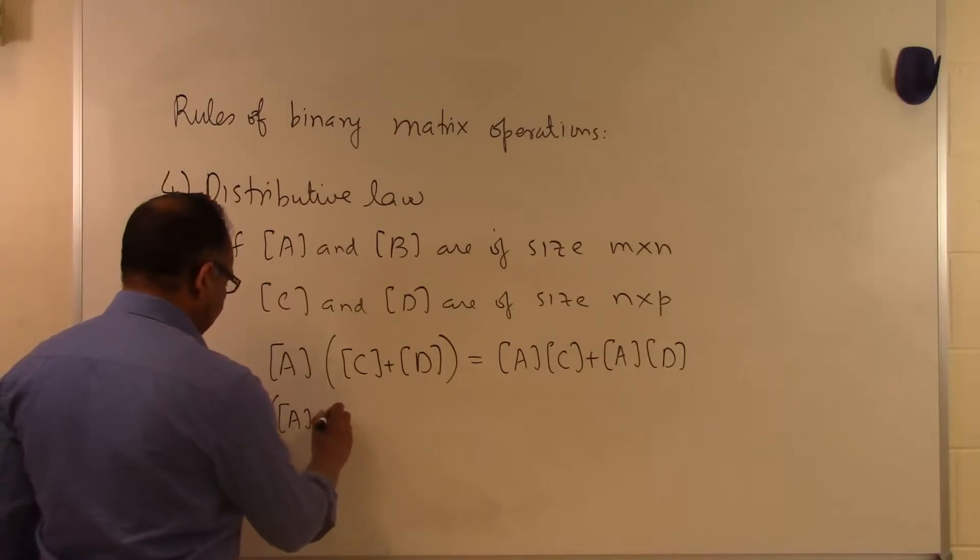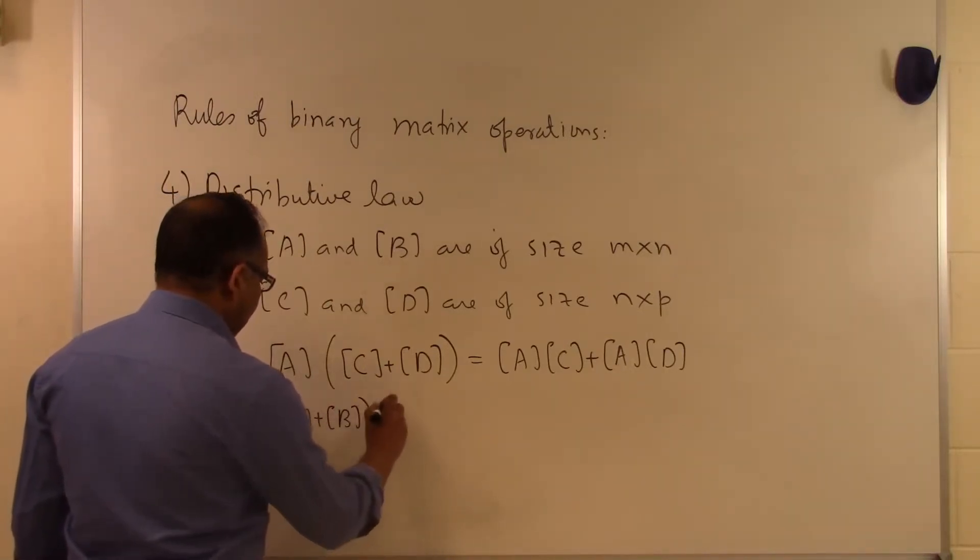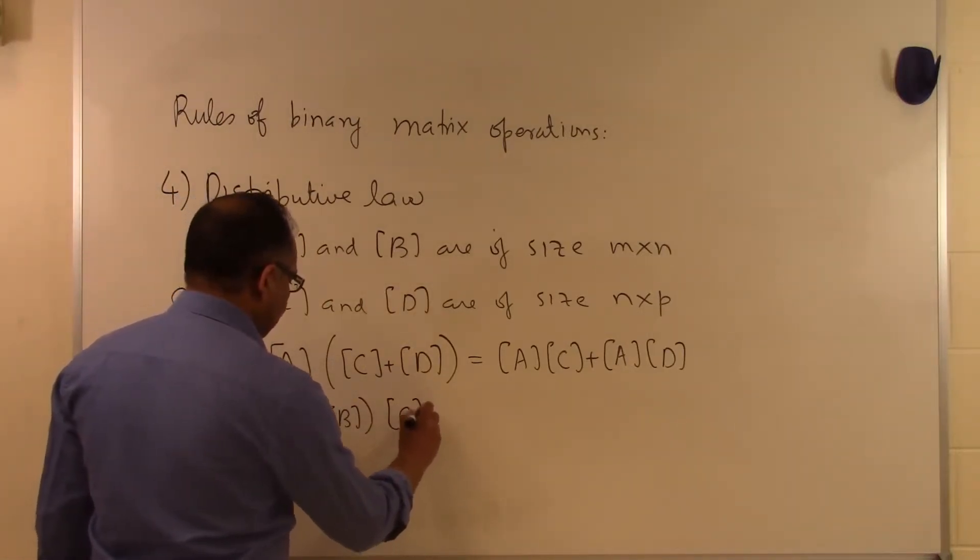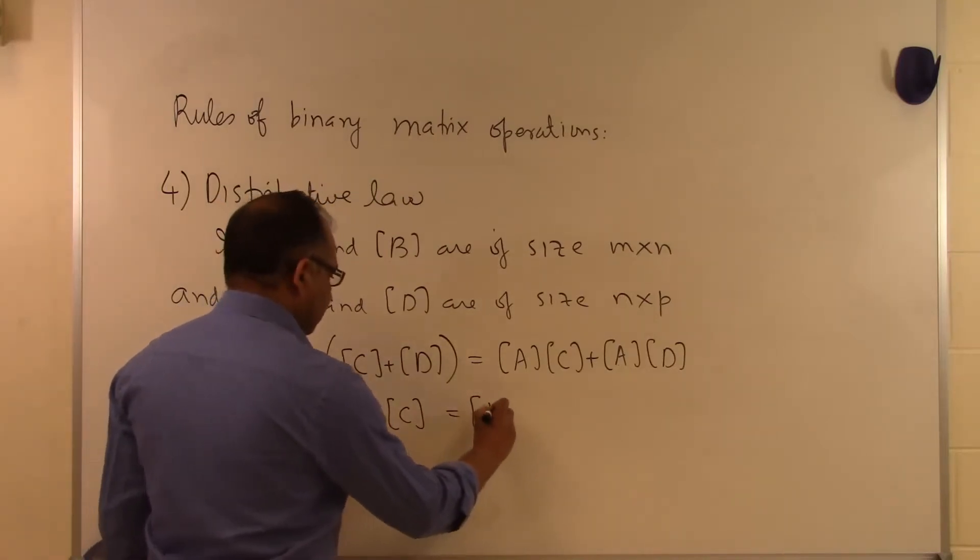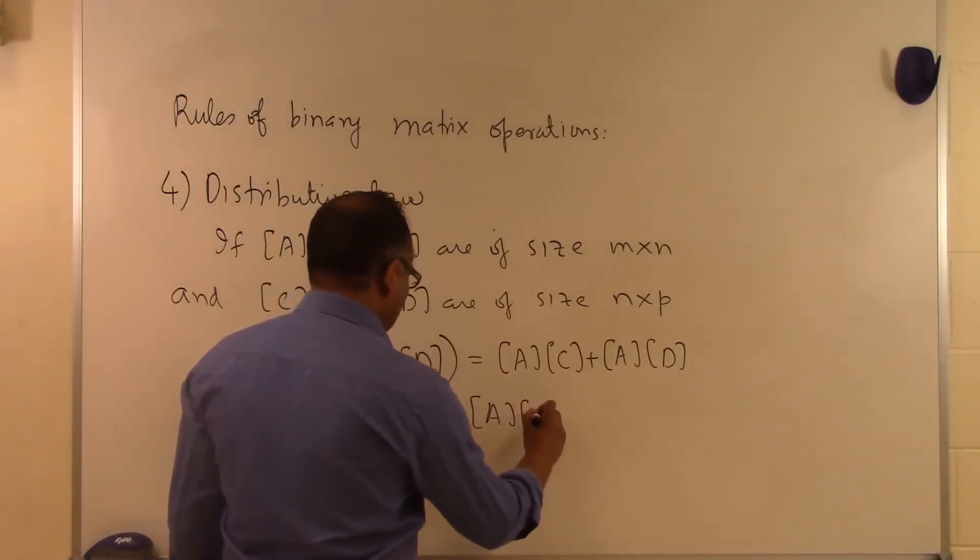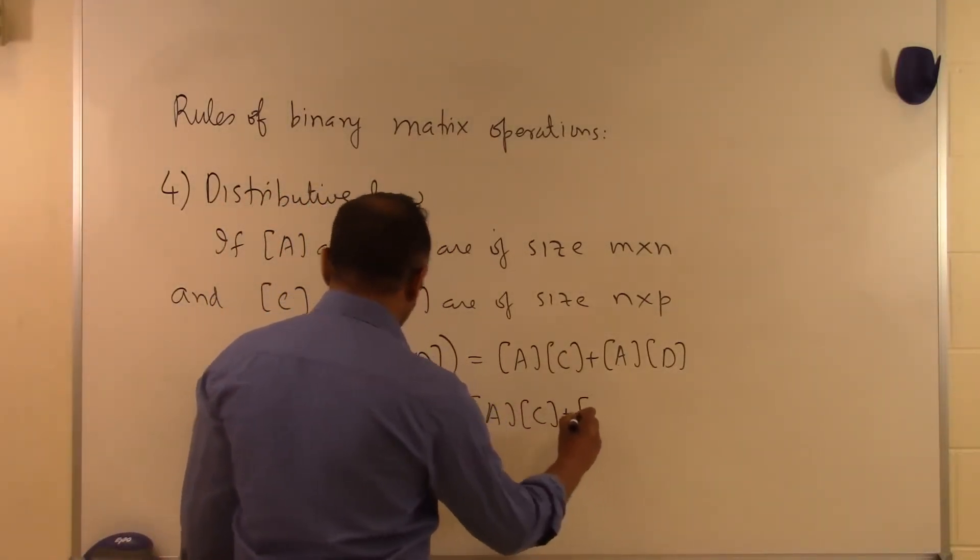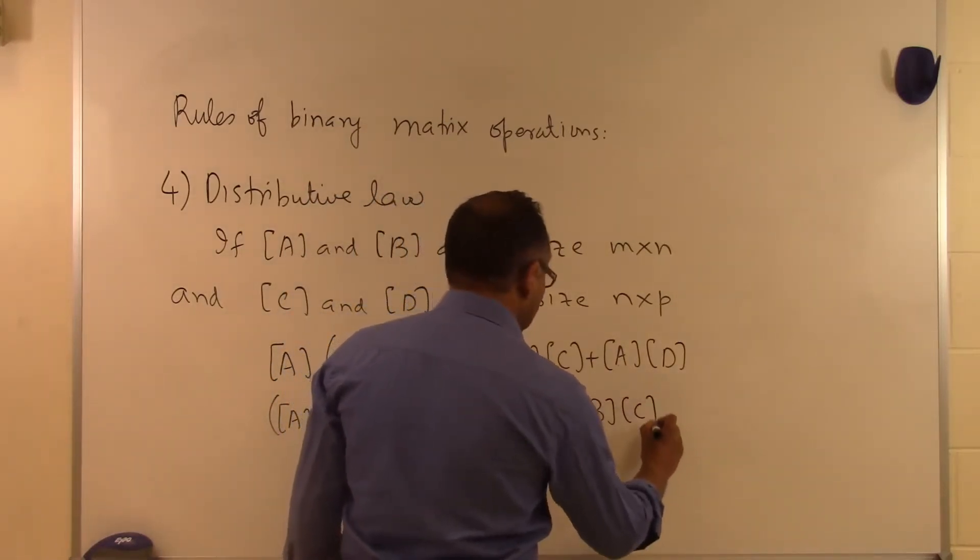And then the other one says that if I do the addition first and then I multiply it by another matrix, let's suppose C, then that is the same as taking A, multiplying it by C, plus B times C.